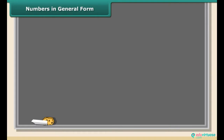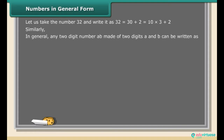Numbers in general form. Let us take the number 32 and write it as: 32 = 30 + 2 = 10 × 3 + 2. In general, any two-digit number AB made of digits A and B can be written as: AB = 10 × A + B = 10A + B.